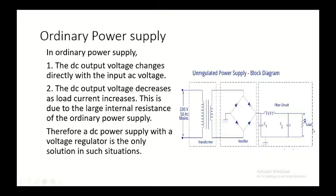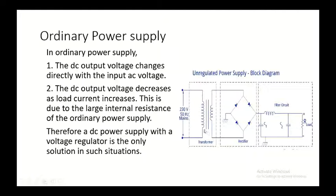The DC output voltage decreases as the load current increases — that is, as the current flowing through the load increases, the output voltage decreases. This is due to the large internal resistance of the ordinary power supply. In order to overcome that, we use a voltage regulator, that is a DC power supply with a voltage regulator.